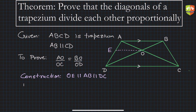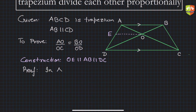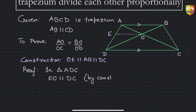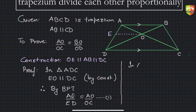Let's take triangle ADC first. In triangle ADC, OE is parallel to DC. Therefore, by the Basic Proportionality Theorem, we can say AE upon ED is equal to AO upon OC. Let this be equation one.